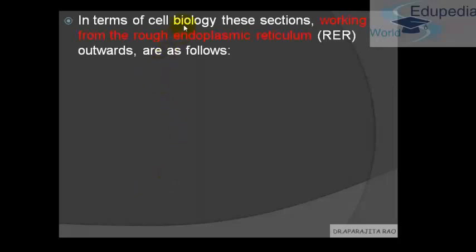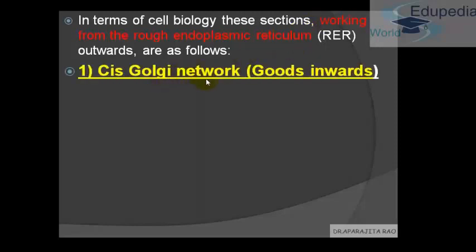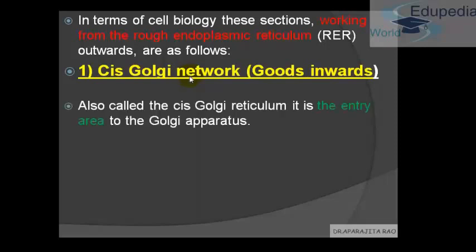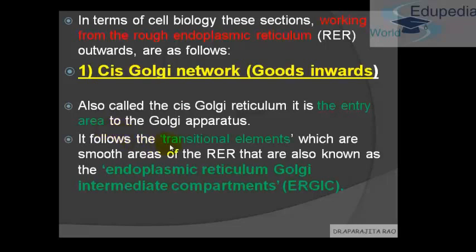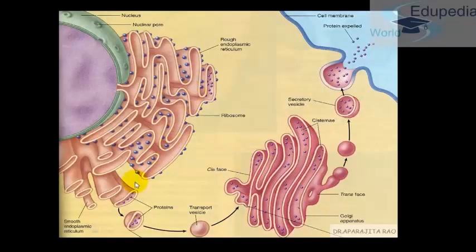In terms of cell biology, these sections are described working from the rough endoplasmic reticulum outward. The first is the Cis-Golgi network, that is goods inward. For more on the Cis-Golgi network, refer to the last video where we covered the anatomy and introduction. The Cis-Golgi network is also known as the entry area. It follows the transitional elements, which are smooth areas of the RER, and is continuous with the rough endoplasmic reticulum, making it also known as the endoplasmic reticulum–Golgi intermediate compartment. In the diagram, you can see protein traveling from the rough endoplasmic reticulum into the Cis-phase of the Golgi apparatus.